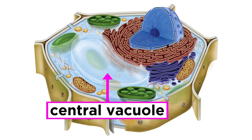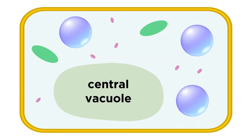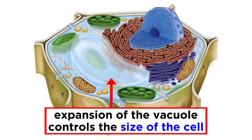In addition to the chloroplast, plant cells have a large central vacuole that contains a fluid called cell sap. This is where the cell stores inorganic ions like potassium and chloride. A plant cell also has many smaller vacuoles with a variety of functions: some store important proteins, others contain poisons that discourage animals from eating them, and others contain pigment molecules to attract pollinating insects. It is the expansion and contraction of this vacuole that controls the size of the cell.